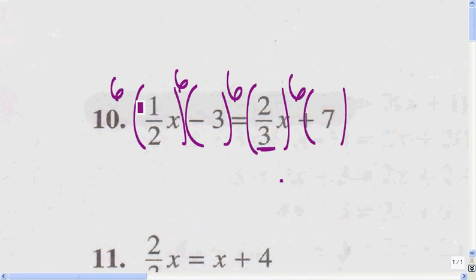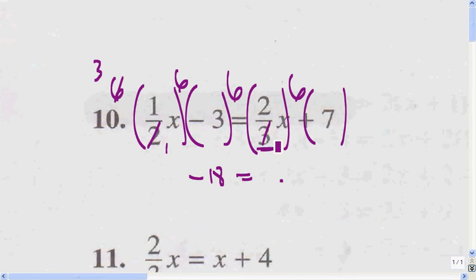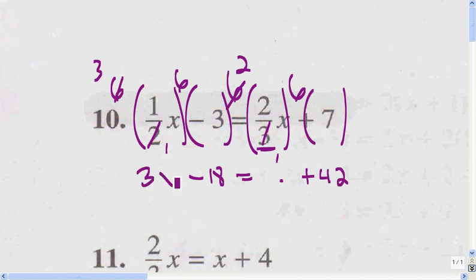Then I can get rid of my denominator here. 2 goes into itself once, goes into 6 three times. 6 times 3 is negative 18. And 3 goes into itself once, goes into 6 two times. And 6 times 7 is a positive 42. 3 times 1 is 3, times x is 3x. 2 times 2 is 4, times x is 4x.